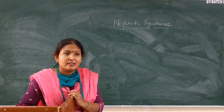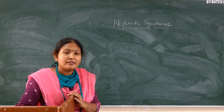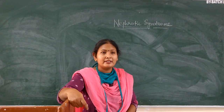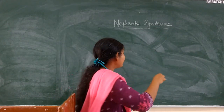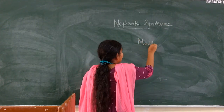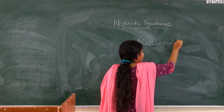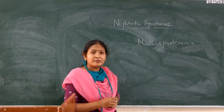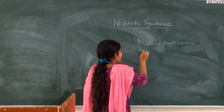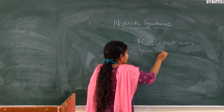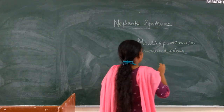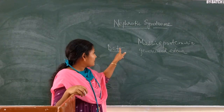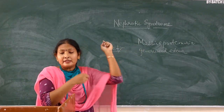Good afternoon students. Today's topic is nephrotic syndrome. Nephrotic syndrome is a type of renal failure. It is characterized by massive proteinuria, and because of massive proteinuria there is generalized edema. So the definition includes these two criteria in nephrotic syndrome.